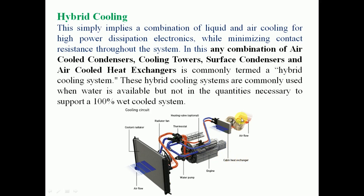In a hybrid cooling example for an electronic device with high heat output, air is blown over the component to carry some heat, and a water-based or oil coolant is also circulated to cool it. The cooled coolant (shown as blue) circulates and gets heated (shown as red), then is circulated to a radiator to exchange heat with the surrounding air. A pump recirculates the coolant back to the cabinet. Both air cooling and liquid cooling are used together — that is hybrid cooling, used for higher heat exchange requiring a combination of heat transfer technologies.